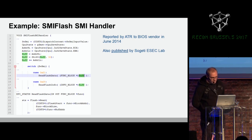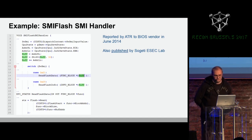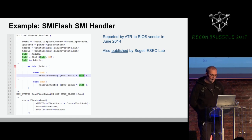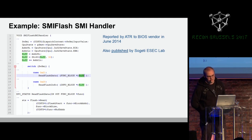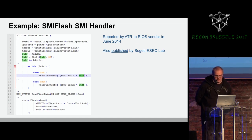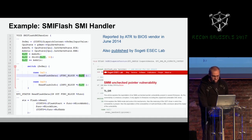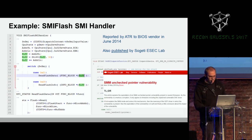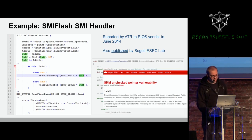There was another example of an SMI pointer vulnerability, found by ATR and then published by SOGITI ESSEC lab. The vulnerability is pretty similar to what we found — it reads the buffer from the general purpose register and passes the buffer to the function read flash data. In that function it uses a read function, and you're controlling the offset of the destination, the source, and the size. There is no check on where the address will be, so if your address is in the range, you can dump, read, and write SMM. Really nice write-up. Also, Dmitry Aleksuk published several blog posts about different types of SMM pointer vulnerabilities.